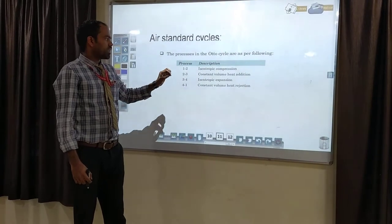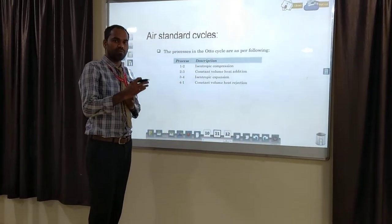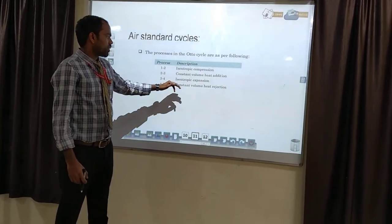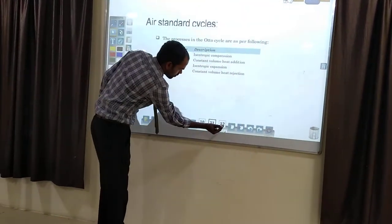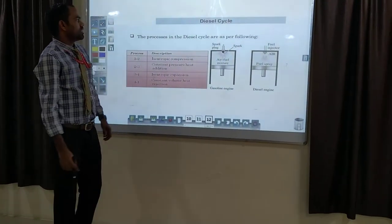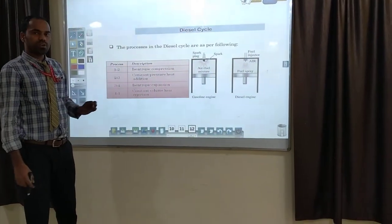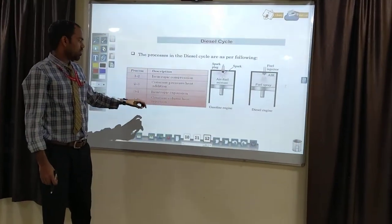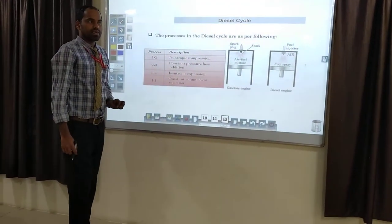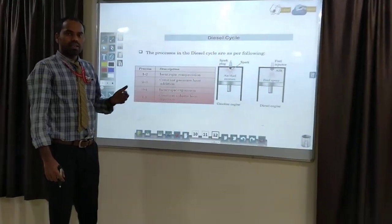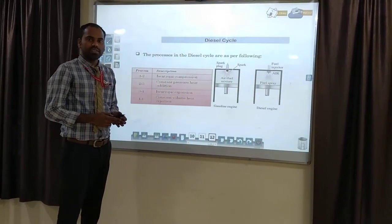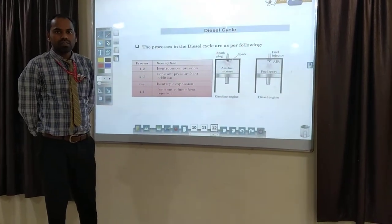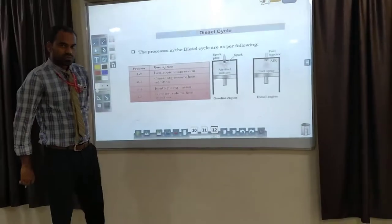In the process of isentropic compression, process 1 to 2 is isentropic compression. In this, air and fuel mixture enters the combustion chamber, and at that time pressure is increased and temperature is also increased. In SI engines the compression ratio is 6 to 12; in CI engines the compression ratio is 16 to 22. The compression ratio is denoted by r, where r = (Vc + Vs) / Vc, or equal to 1 + Vs/Vc.